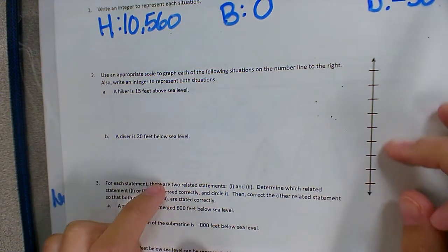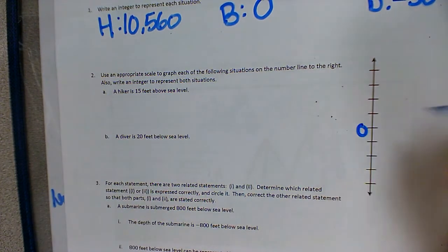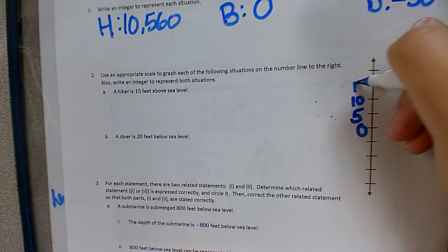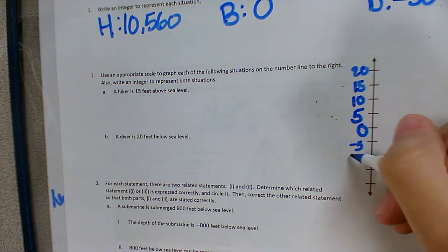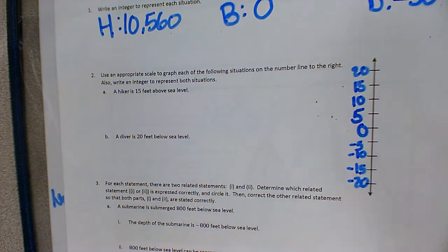If we find our center, our zero, we can count by fives. 5, 10, 15, 20, negative 5, negative 10, negative 15, and negative 20.